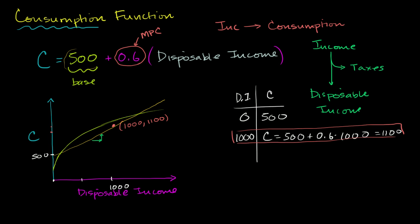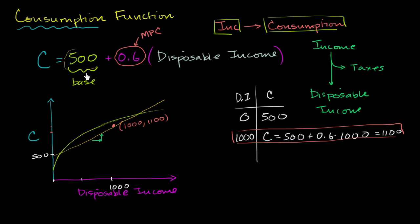In the last video, we began our exploration of what a consumption function is. It's a fairly straightforward idea — a function that describes how aggregate income can drive aggregate consumption. We started with a fairly simple, linear consumption function. You had some base level of consumption regardless of aggregate income, and then some level of consumption induced by having some disposable income.